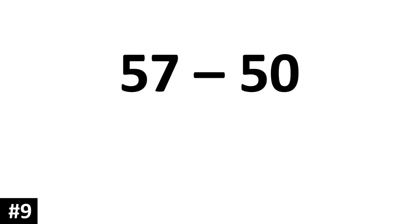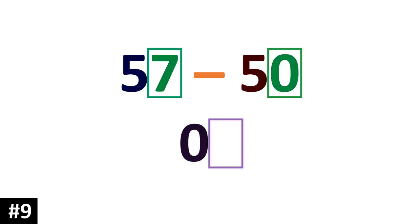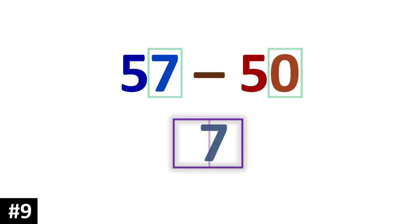57 minus 50. 5 10s minus 5 10s is 0 10s. We look to the ones: 7 minus 0 is 7. So our answer is 7.